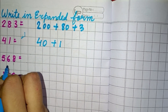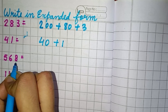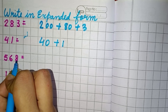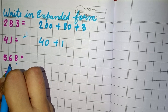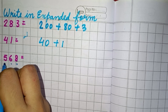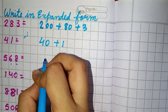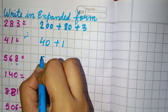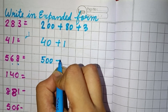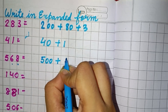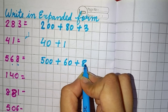Now next we have 568. So we can see 8 is in 1's place, 6 is in 10's place, and 5 is in 100's place. So we will write here 500 plus 60 plus 8.